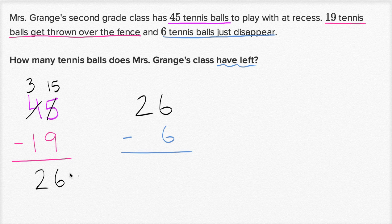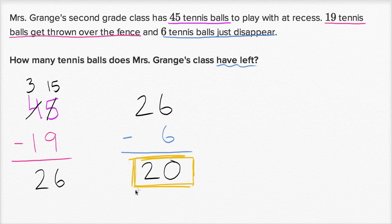So we want to subtract those. So how many do we have left? Well, six ones minus six ones is zero ones. Two tens minus nothing here, that's just going to be two tens. So how many does Mrs. Grange's second grade class have left? Well, you see it right here. They have 20 tennis balls. 20 tennis balls left.